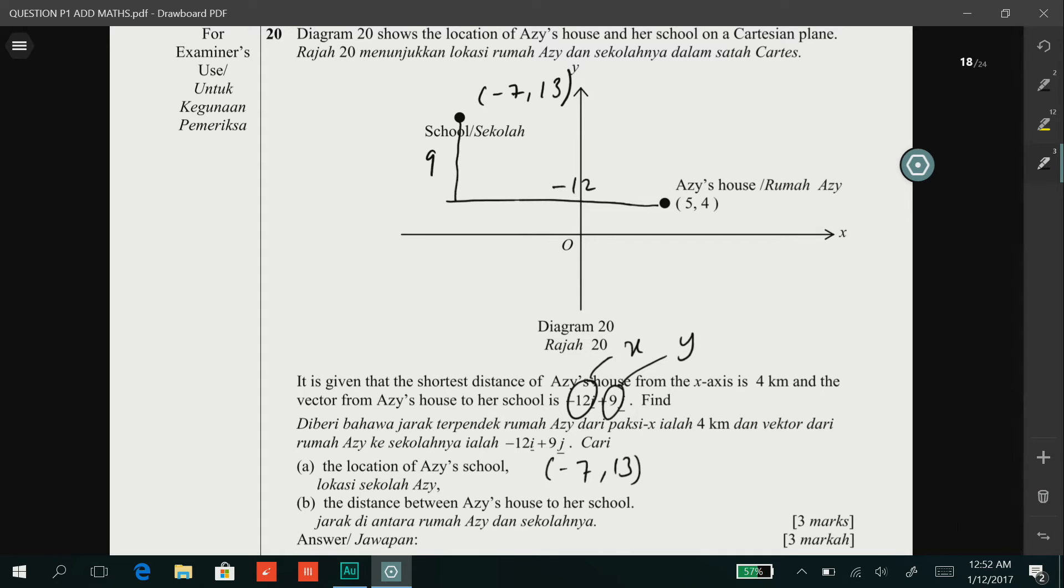For question B, the distance between Aziz's house to her school. If you look at the diagram here, you can draw a right angle triangle. Hence, to find the distance of school to Aziz's house, we can use Pythagoras theorem.